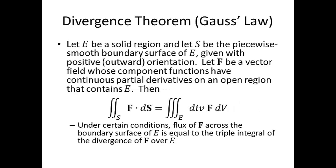The divergence theorem, or Gauss's Law, says: let E be a solid region and let S be the piecewise smooth boundary surface of E, given with positive or outward orientation. Let F be a vector field whose component functions have continuous partial derivatives on an open region containing E. Then the surface integral of the vector field is equivalent to the triple integral of the divergence of F dV. The flux of F across the boundary surface of E equals the triple integral of the divergence of F over E.